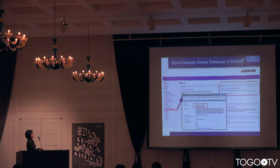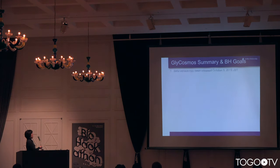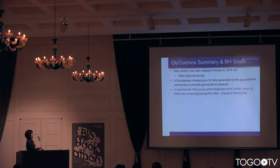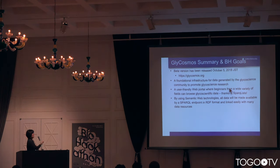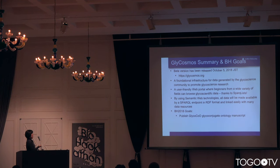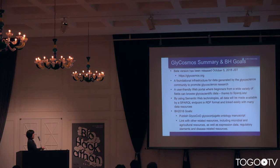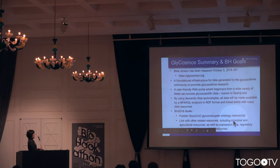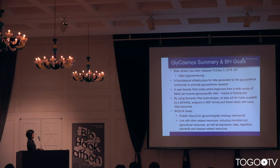We also have a glyco-disease genes database. There are many resources we're trying to develop, building the foundation to integrate them using the semantic web. Thanks to SPARQL, it's been easy to display this data on the web and integrate it with other data resources. At this biohackathon, I want to publish the ontology for glycoconjugates and link with other related resources, including microbial and agricultural resources — we don't have anything about plants yet — as well as expression data, regulatory elements for the glycogenes, and disease-related resources.